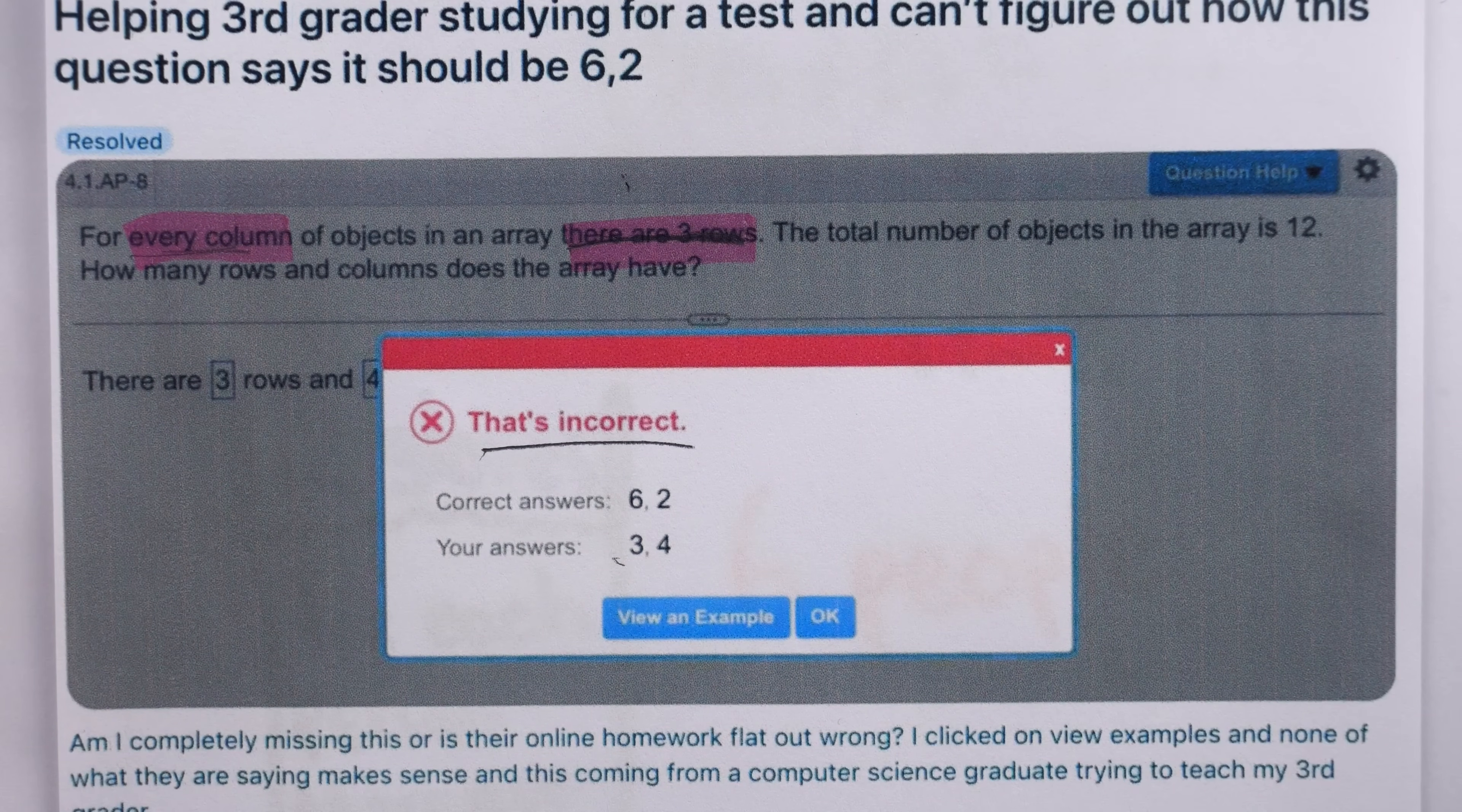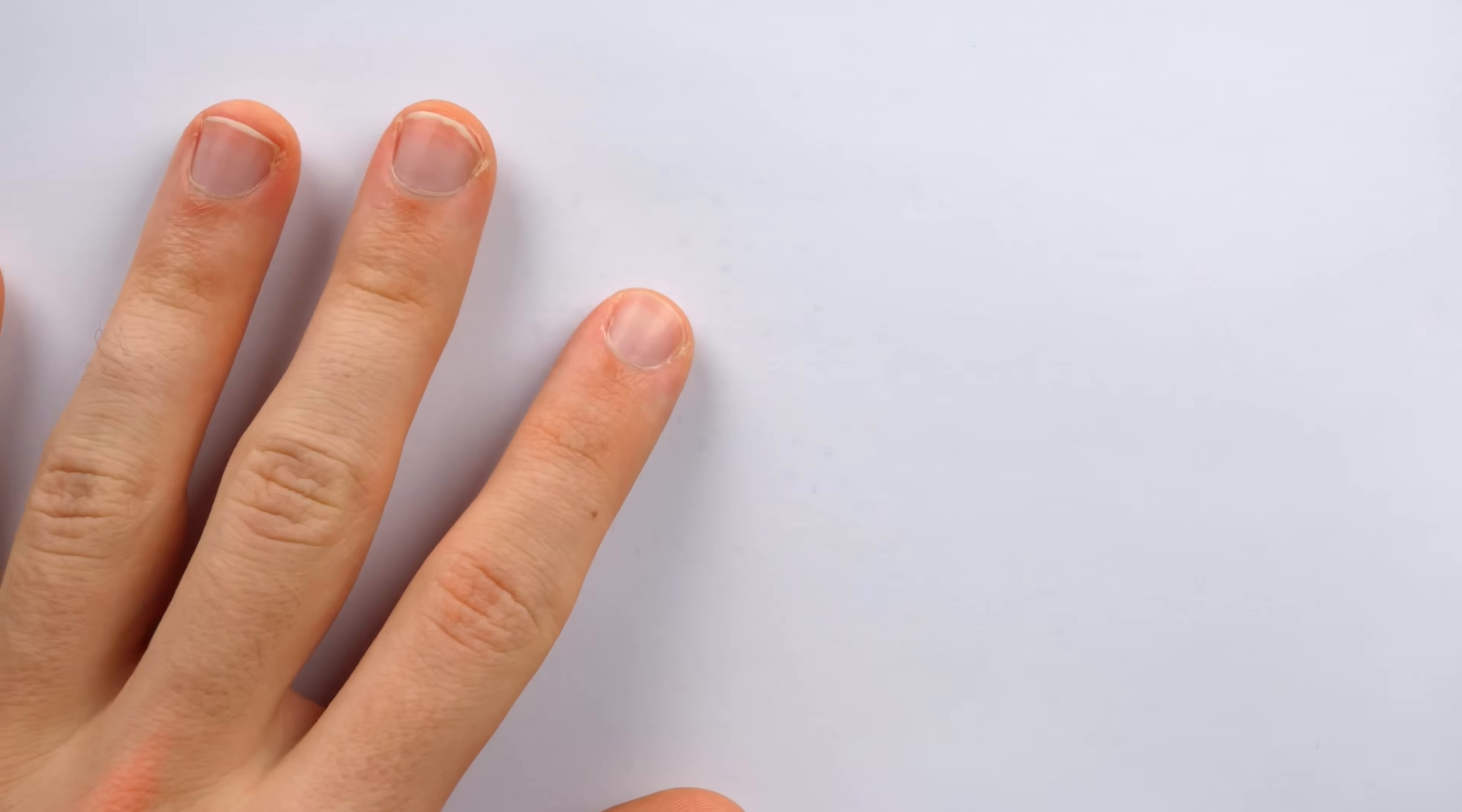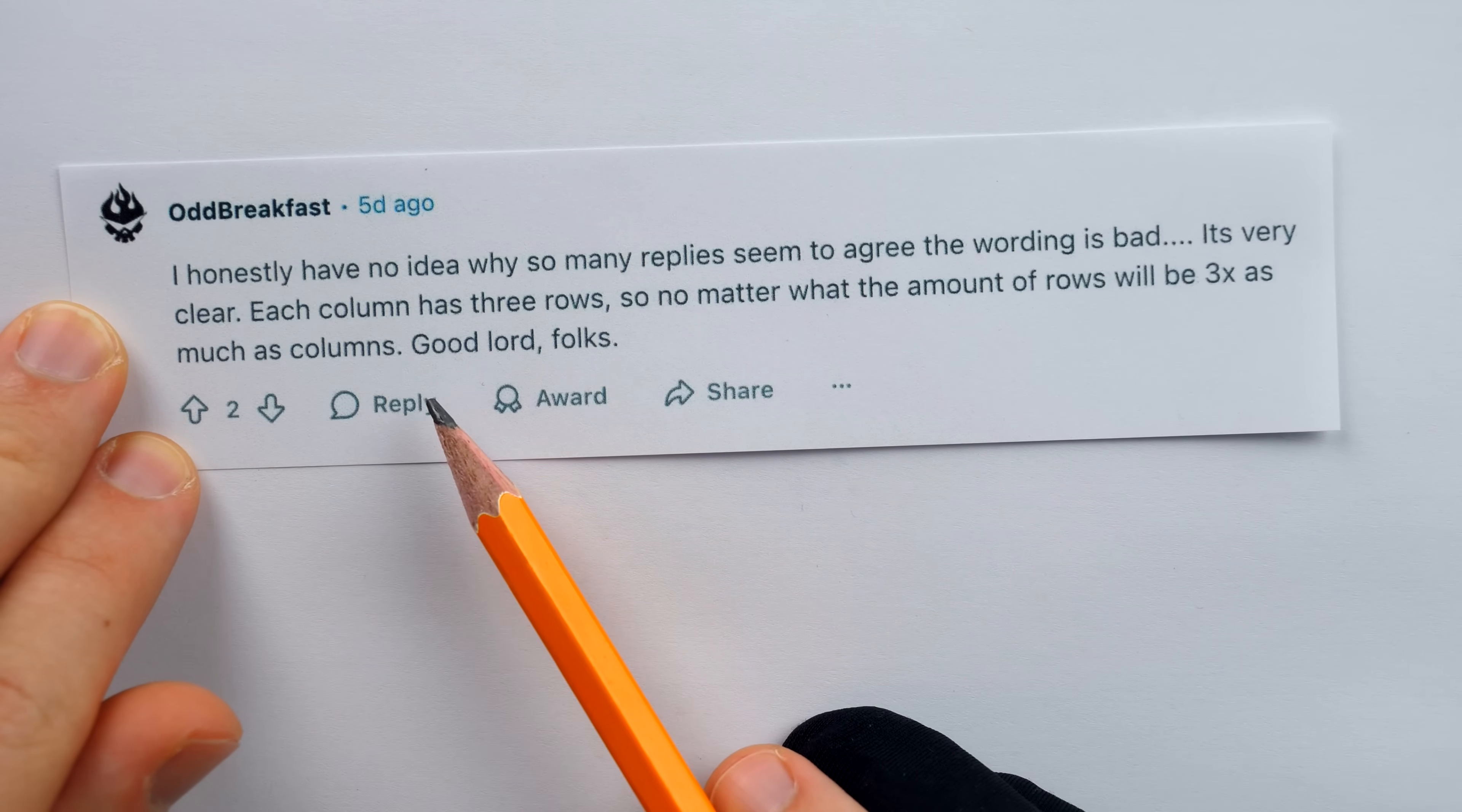Kara Puppers also supported the OP, saying that it appears every post agreeing with the 6-2 correct answer from the homework platform is dropping the word array from their rationale. She says, if every column in a 2D array has three rows, you need four columns to hold 12 objects. Of course, not everybody agreed with OP. Others thought that the OP, as well as many of the other denizens of the thread, were fairly numbskulled nincompoops. OddBreakfast said, I honestly have no idea why so many replies seem to agree the wording is bad. It's very clear. Each column has three rows, so no matter what the amount of rows will be three times as much as the columns. Good lord, folks.